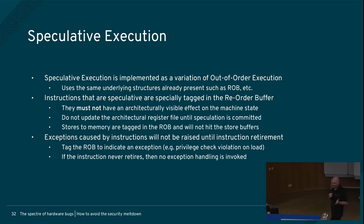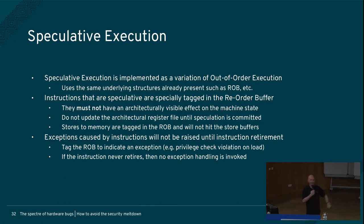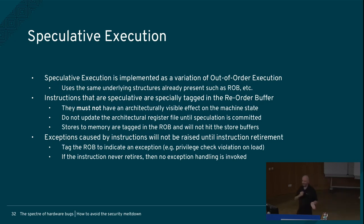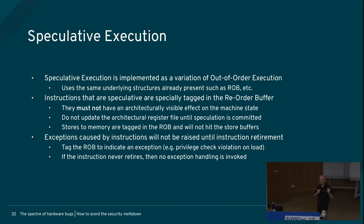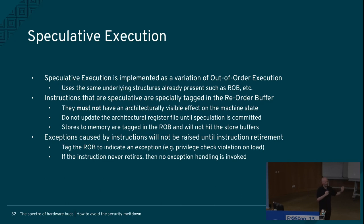Speculation is an extension of out-of-order execution. We tag the instructions and say we're not really sure what's going to happen here, and if we're wrong, we undo things. As a result, bad things that happen during speculation may or may not actually have happened. For example, if I divide by zero in my code, that's an exception — but if I'm speculating and hit a divide by zero, maybe the program didn't go that way. So I also tag in the reorder buffer whether to raise an exception and handle it later. This is what leads to Meltdown.